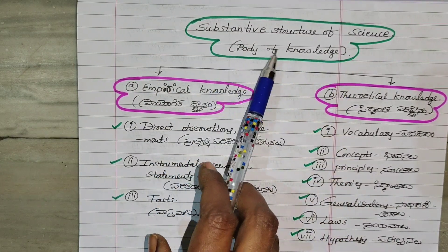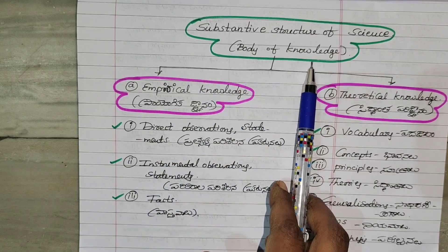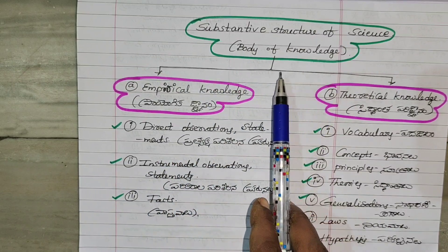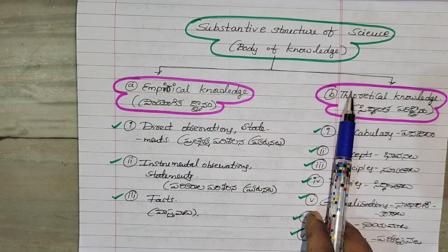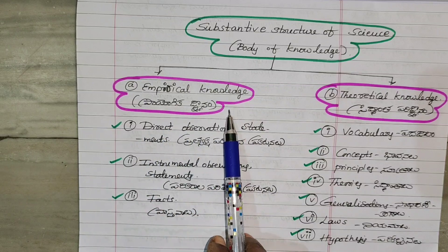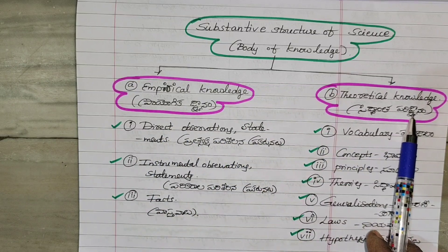The Substantive Structure is the body of knowledge, and it is divided into two types: empirical knowledge and theoretical knowledge.